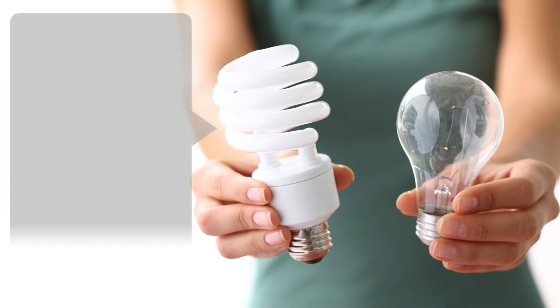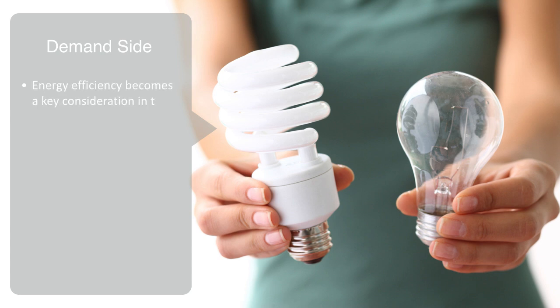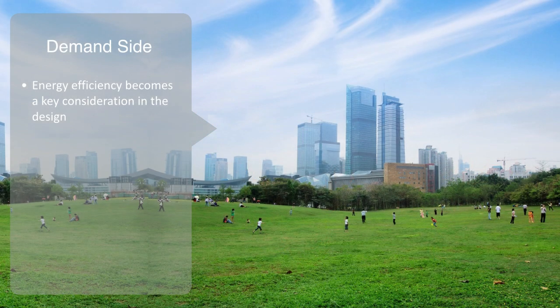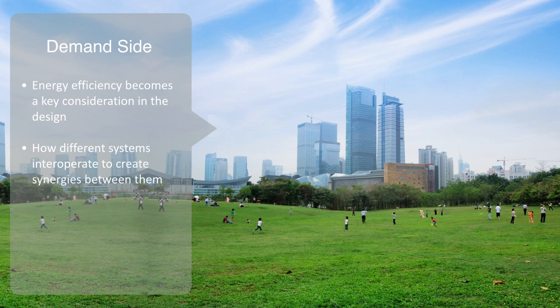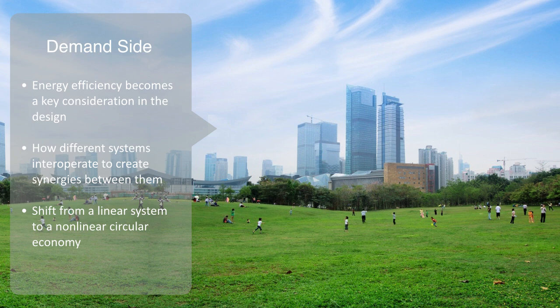On the demand side, it means using these resources more efficiently, both on the micro level as energy efficiency is becoming a key consideration in the design of everything from light bulbs to washing machines and houses. But also on the macro scale, sustainability is not the property of a thing. Things can't really be sustainable in isolation. It's about integrated systems, looking at how different systems interoperate and how to create synergies between them. This again is a major disruption to our traditional industrial model that is very much focused on optimizing subsystems in isolation. Key to achieving sustainability is the shift from a linear system to a non-linear circular economy, and this is about seeing across domains and across levels to be able to create connections and processes for recycling material between disparate systems.